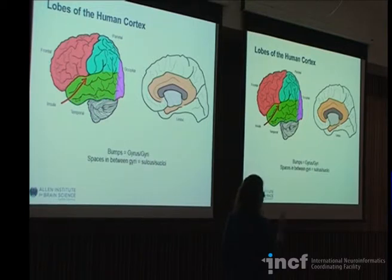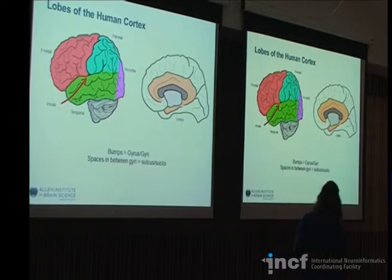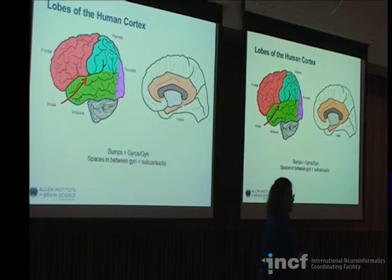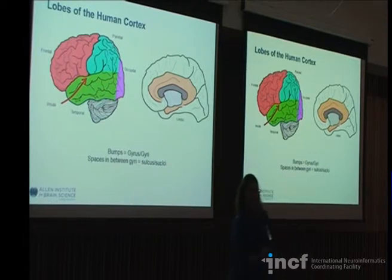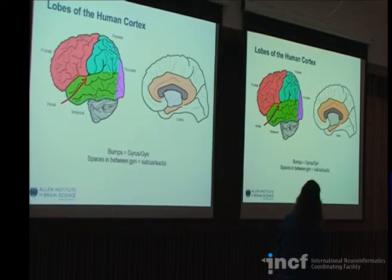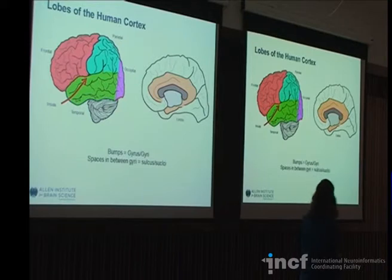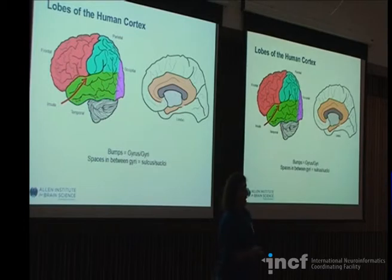The bumps on the brain are called gyri — singular is gyrus. The divots in between are the sulci, or a sulcus. Each one has a specific name. In the frontal lobe you'll have a superior frontal gyrus, a middle frontal gyrus, and an inferior frontal gyrus. Similarly, a superior temporal, middle temporal, and inferior temporal gyrus. So the name gives you some indication of where you're located.